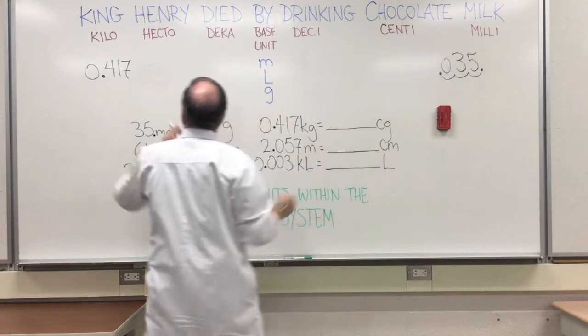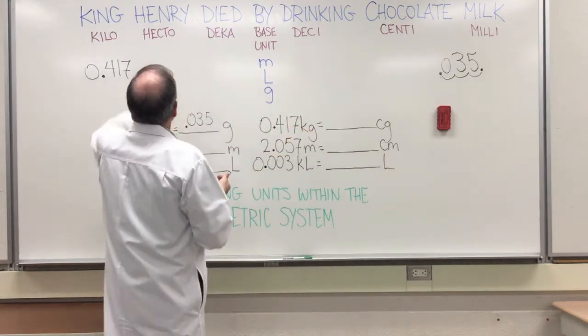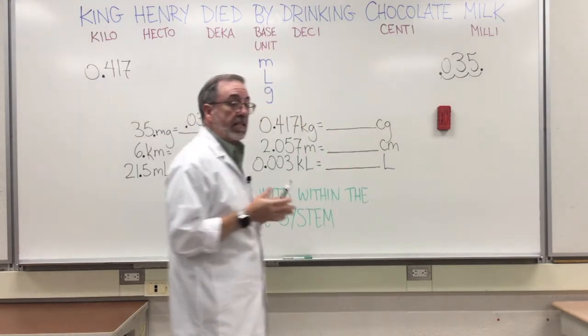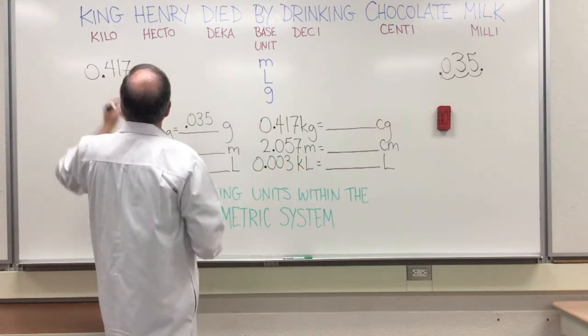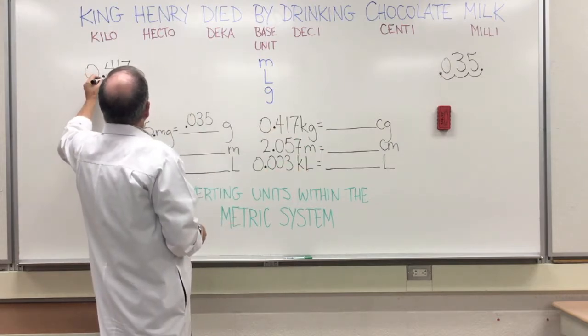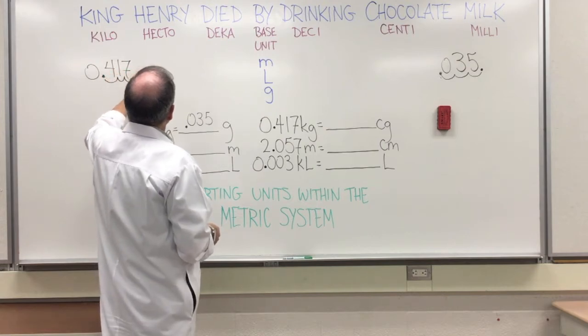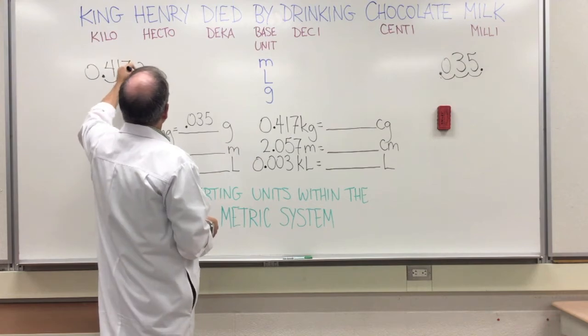We're gonna have to go to the right - how many spaces? One, two, three, four, five. So that's how many times we're gonna have to bounce that decimal. So five to the right. Here we go - one, two, three, four, five, put your decimal, and then in these empty spots you put your zeros.